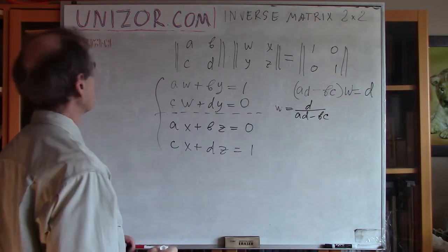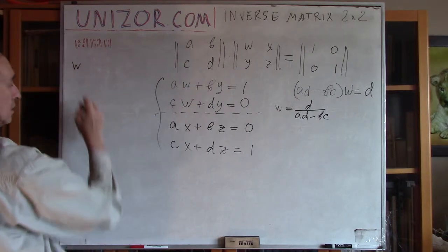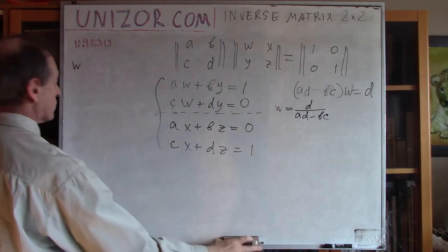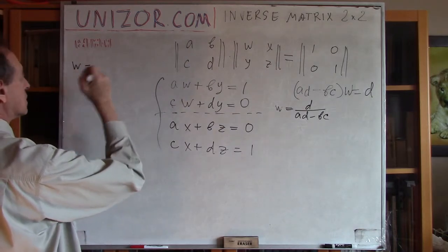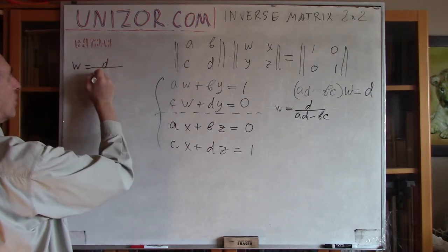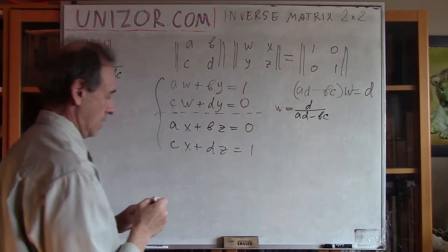Okay? Now, okay, let me write it here. W equals, actually, yeah, alright, W equals D divided by A, D minus B, C.